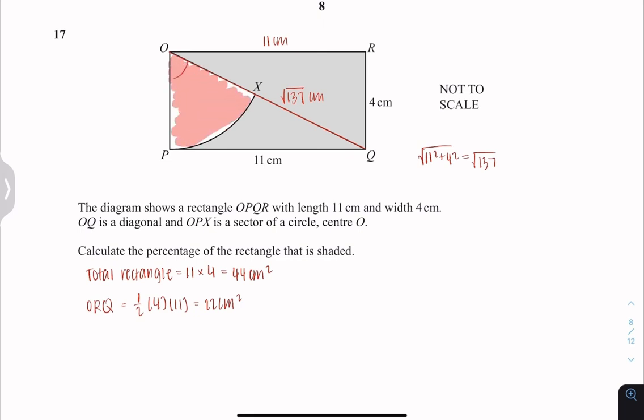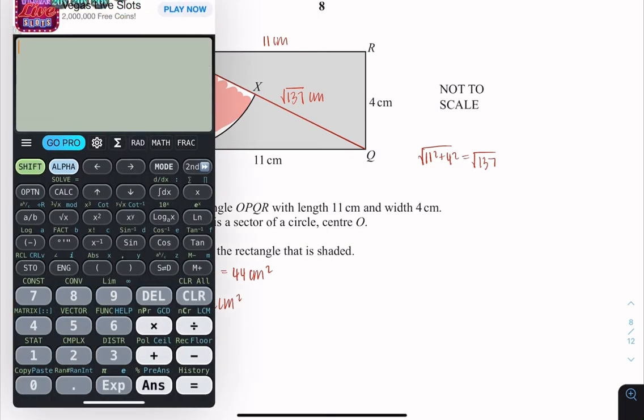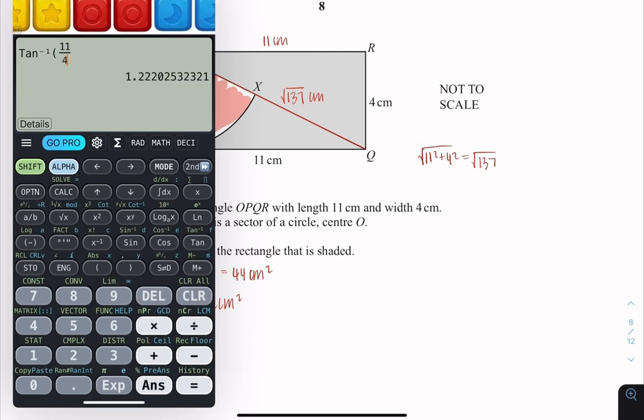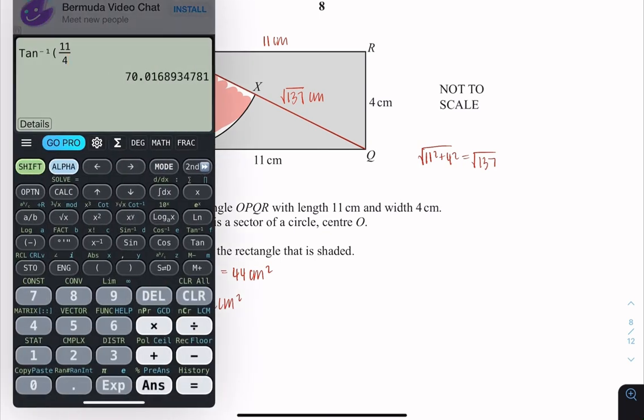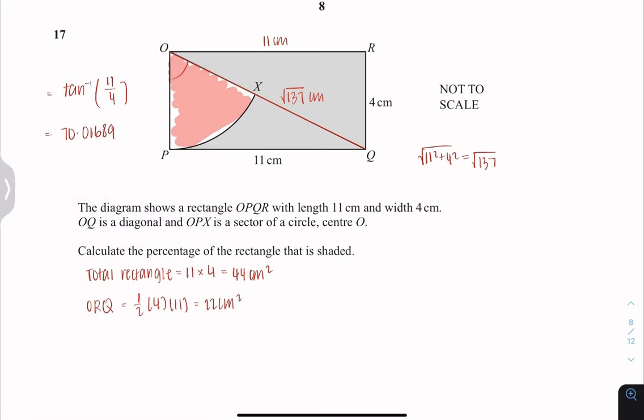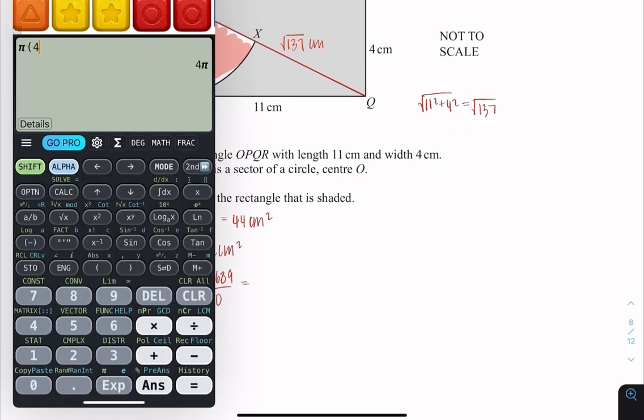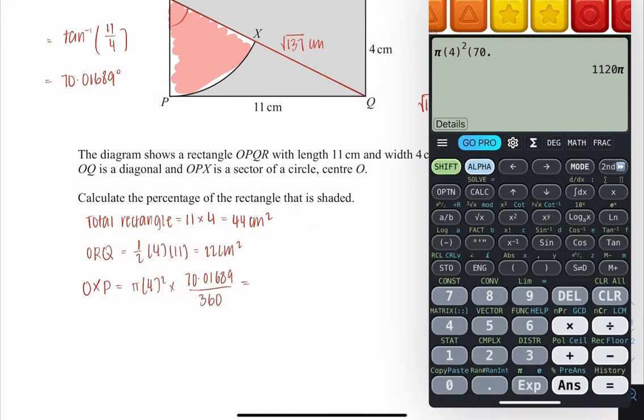OPX. To find the area we need to find the angle. So that is just opposite over adjacent. That is 11 over 4. Put that into your calculator. That gives me 70.01689. So I use a lot of decimal places just so my answer is more accurate at the end. The area of OXP is πr squared multiply out 70.01689 over 360.